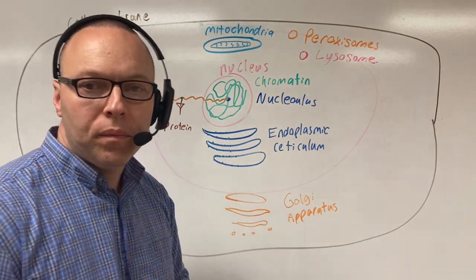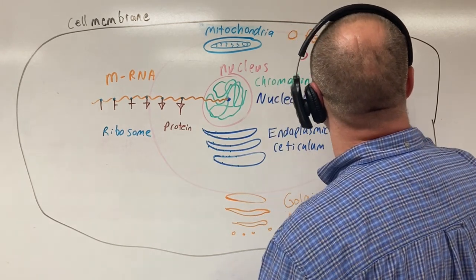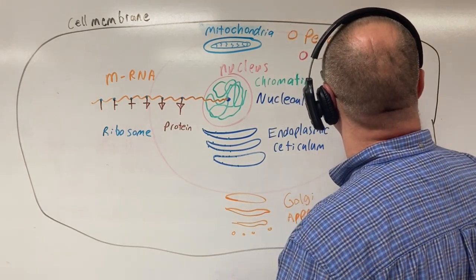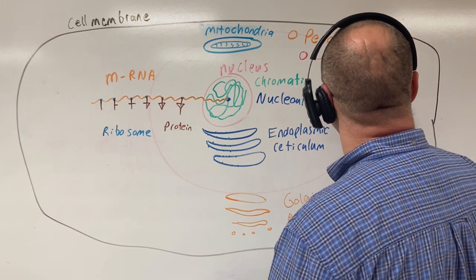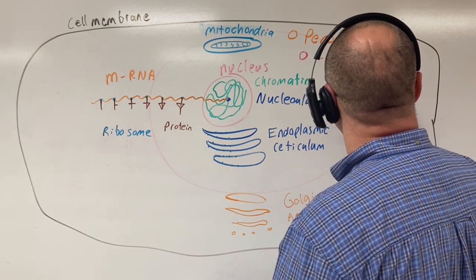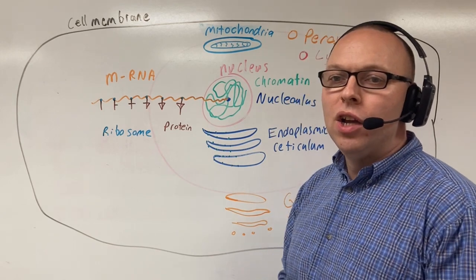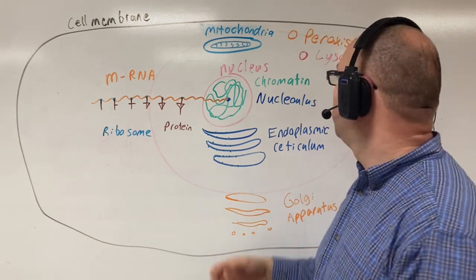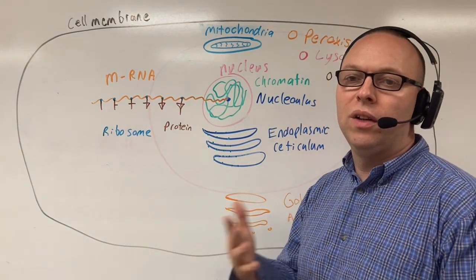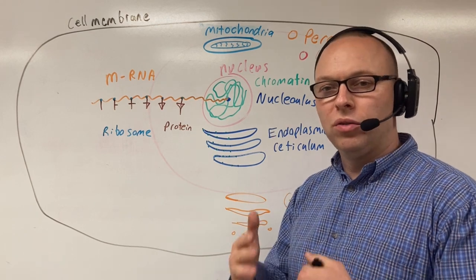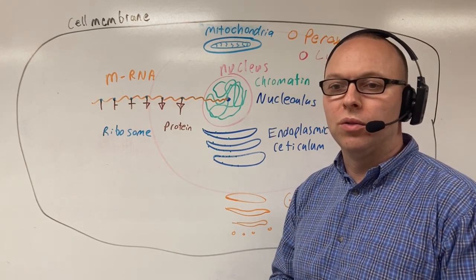Next thing we have is vacuoles or vesicles. Vesicles and vacuoles are basically cellular bags. When we need to put something in a little bag we can use a vesicle or vacuole. Vacuoles are just bigger versions of vesicles.